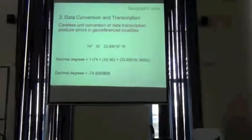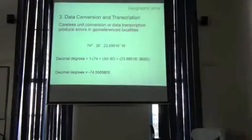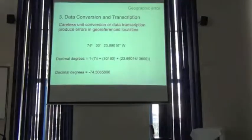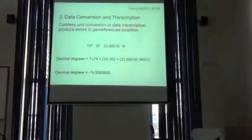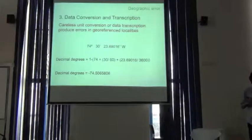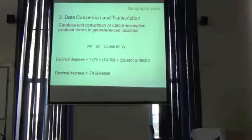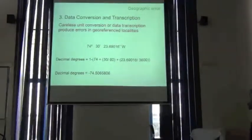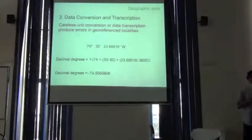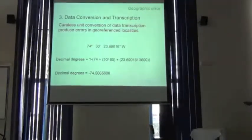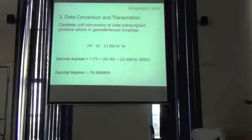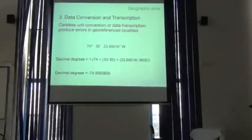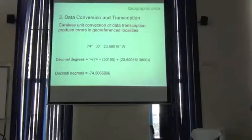Another way of making mistakes in the georeferencing is the process of converting your data. We have different ways that geographic coordinates are presented. For example, here we have degrees, minutes, and seconds, and here we have decimal degrees. It is important to keep that distinction in mind.